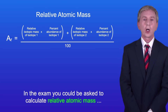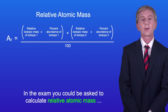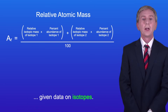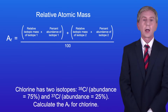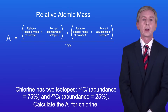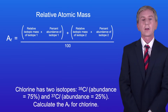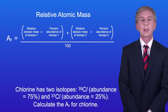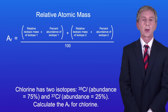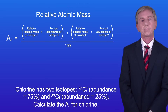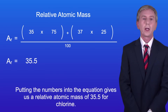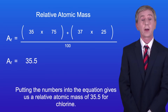In the exam you could be asked to calculate relative atomic mass given data on isotopes. Let's try some examples. Chlorine has two isotopes: chlorine-35 with an abundance of 75% and chlorine-37 with an abundance of 25%. Calculate the relative atomic mass for chlorine — pause the video now and try this yourself. Putting the numbers into the equation gives us a relative atomic mass of 35.5 for chlorine.